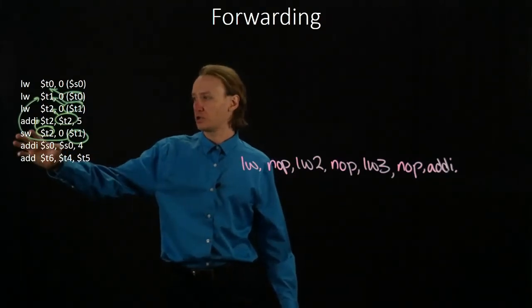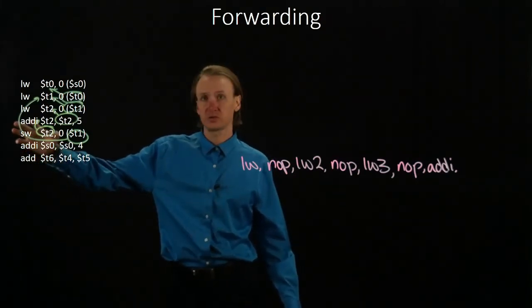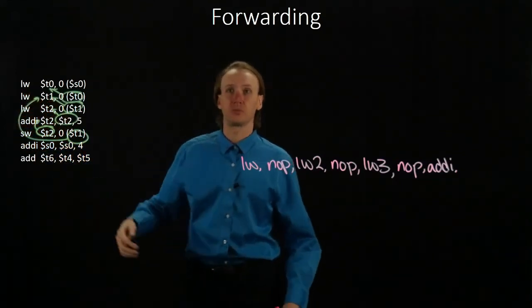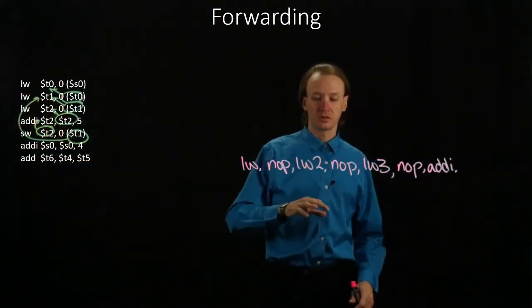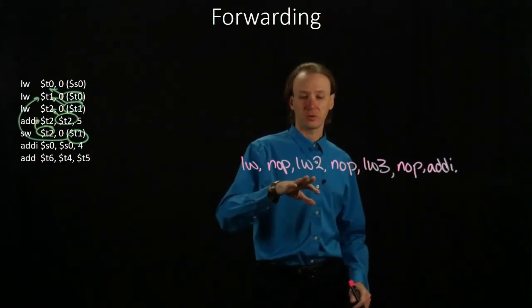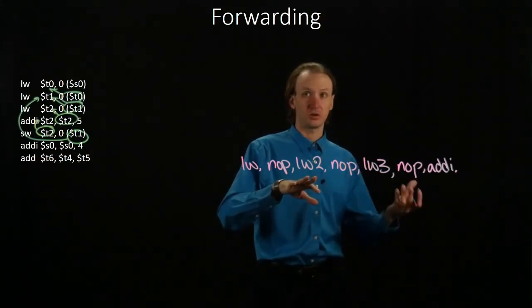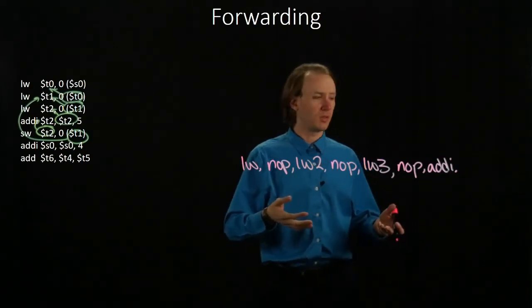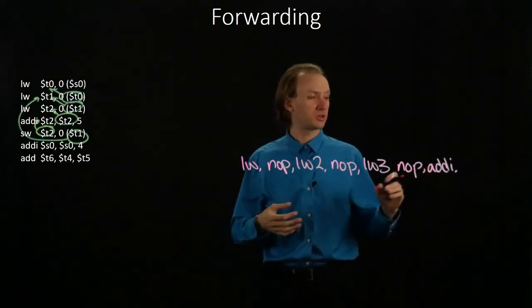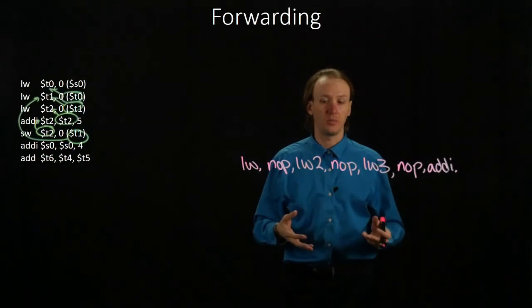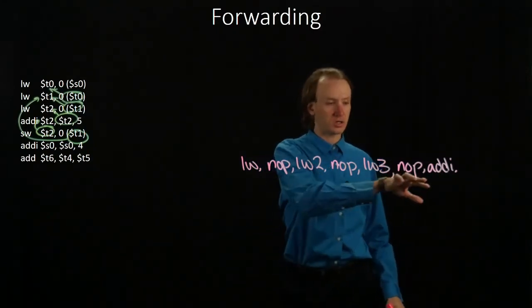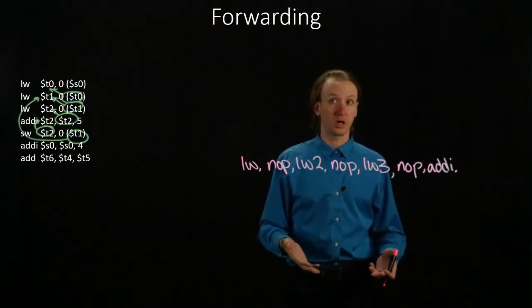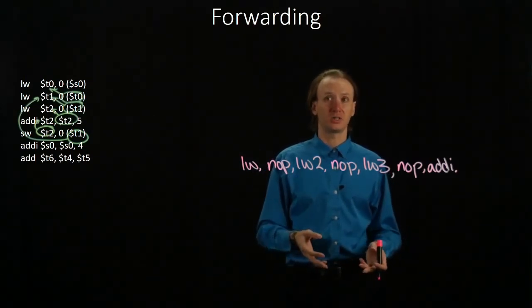Next we have a store word operation. This depends both on the results of the add immediate instruction before it, as well as the results of load word number two. So we need to make sure that load word number two has completed its results, maybe committed them back to a register before we run our store word instruction, but we also need to make sure that we have the results of our add immediate instruction available. We've had four clock cycles since load word number two ran, so that data should be available in a register for us. T1 should be available to us.